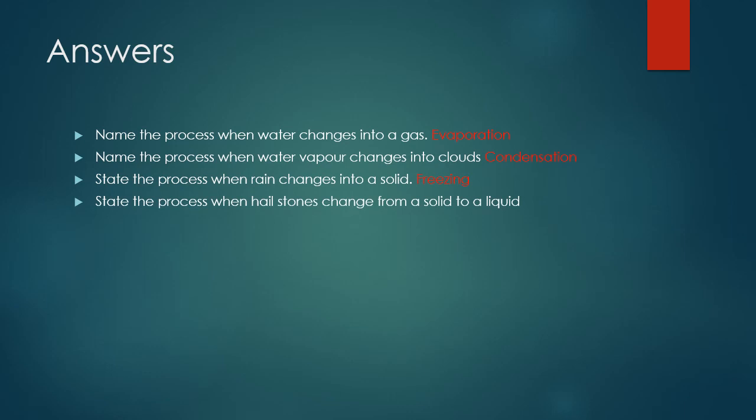State the process when hailstones change from a solid to a liquid. Remember, as the hailstones fall onto the ground, because the temperature changes it becomes warmer. The solid is changing into a liquid and that liquid is water. The process is now called melting. When a solid changes into a liquid, we say that it is melting.